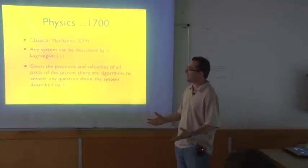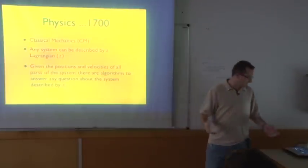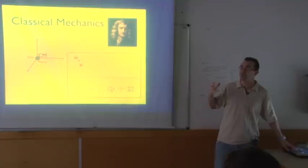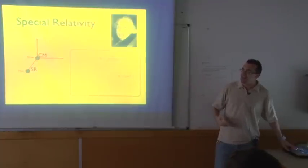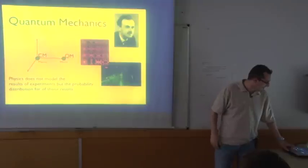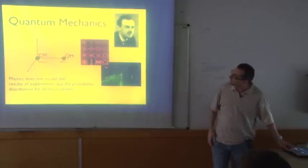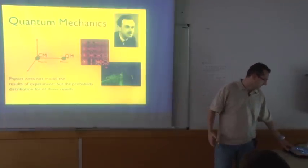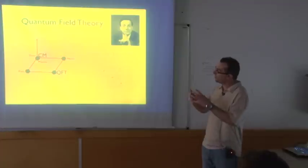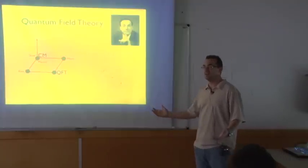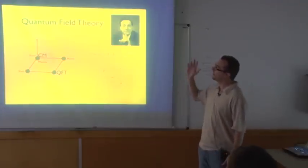In the 1700s, people came up with classical mechanics. Every system can be described by a Lagrangian, and you describe things with the position and velocity of the components. Classical mechanics describes things which are macroscopic and slow. Then Einstein extended that to systems which are macroscopic and fast, and also extended it to gravitation — but we are not interested in that. Then various people, including Dirac, built quantum mechanics, which extended classical mechanics to things that are slow but microscopic. Then Feynman and others extended both special relativity and quantum mechanics to systems which can be small, large, microscopic, fast, or slow. That's called a quantum field theory.